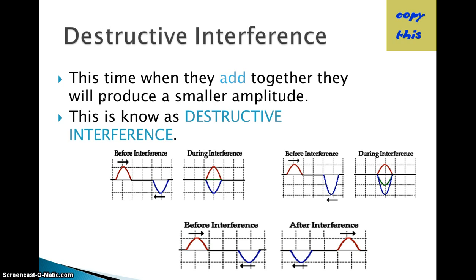Destructive interference is when waves add together to produce a smaller amplitude — the amplitude can become zero when two equal but opposite waves meet. For example, if the red wave has a value of one and the blue wave has a value of negative two, the resulting green trough ends up at negative one: some of the wave is canceled out. If that were noise it would become quieter. Note that sound waves are compressional waves, not transverse waves.